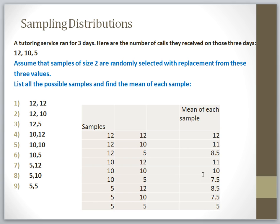In the next example, we're going to look at something called sampling distributions. Sampling distributions can be a little confusing at first because they have many steps and stages. This example that we're going to do is actually very small because sampling distributions can get pretty huge and we wouldn't be able to list everything out in example form. In this example, we have a population of only three values, which is very unusual because often populations are enormous, like billions of people.